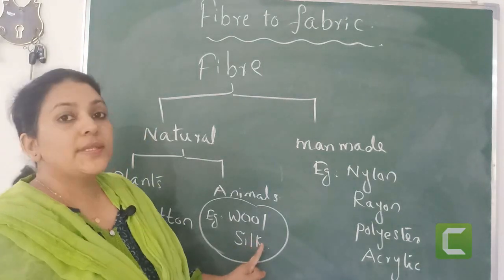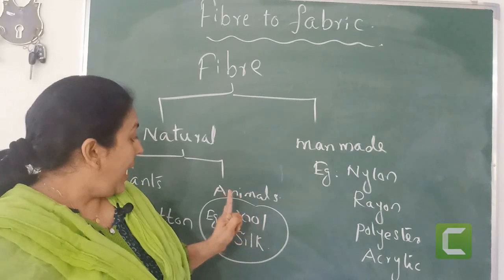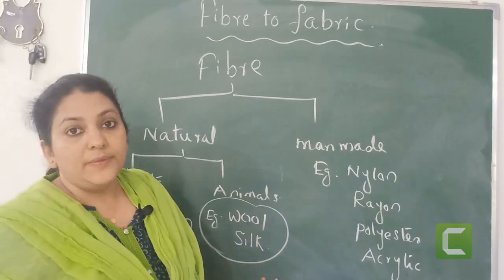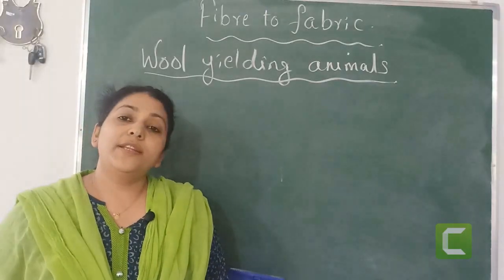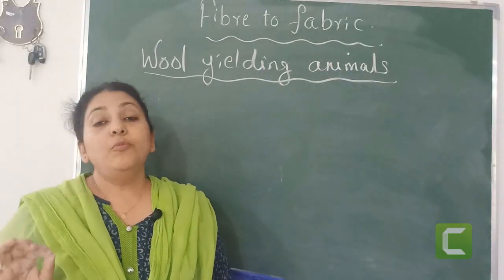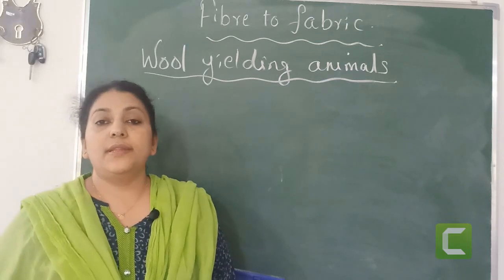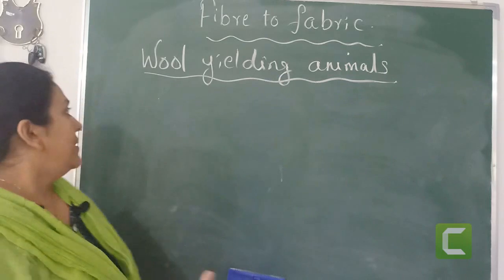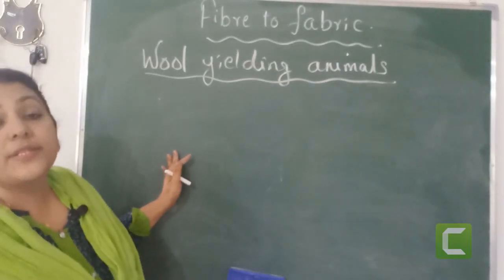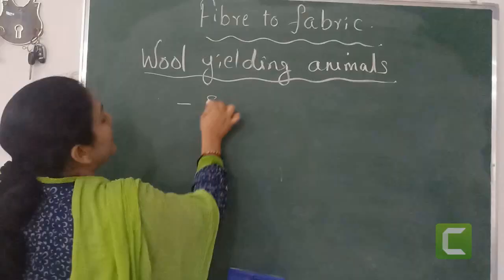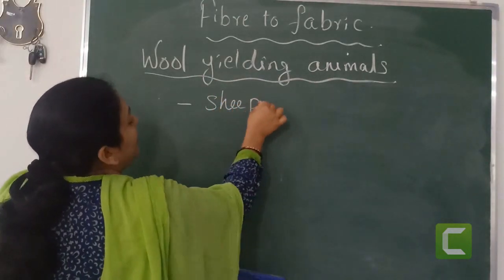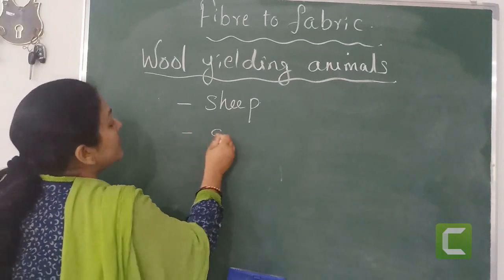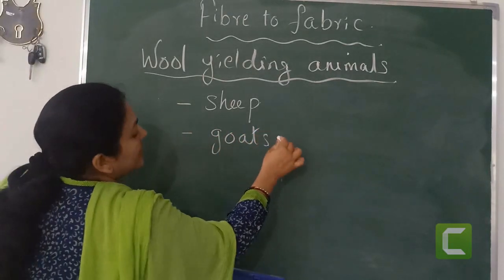Now we are going to discuss about animal fibers. The first among them is wool. Let us think about some wool-yielding animals. Let us write some examples on the board. We know sheep — one of the examples that gives us wool. Then goats — different types of goats are there.